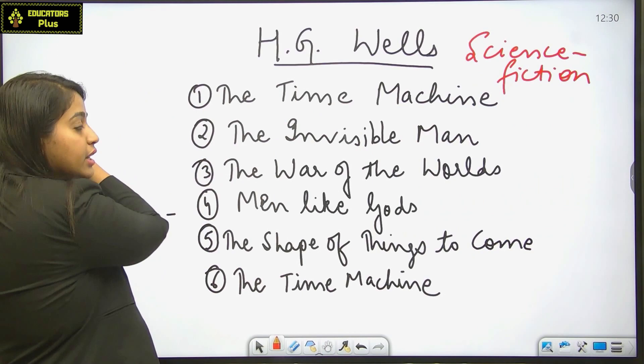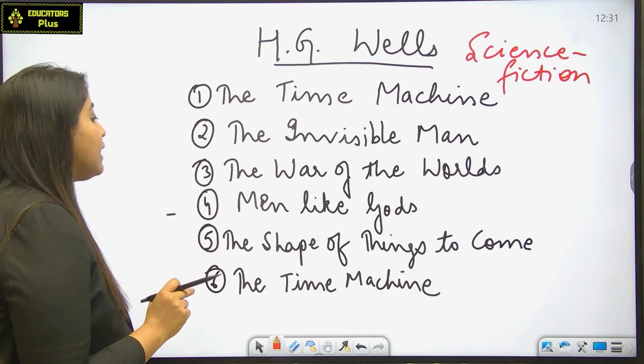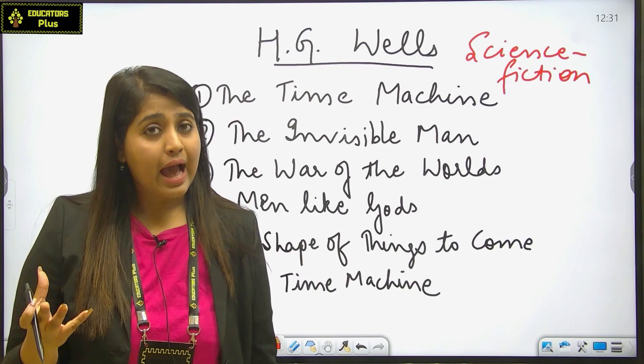You can see these are his notable works: Time Machine, The Invisible Man, The War of the Worlds, Men Like Gods, The Shape of Things to Come, and The Time Machine. Please remember the names, the main plot, and the characters of these works because these are very important from an examination point of view.